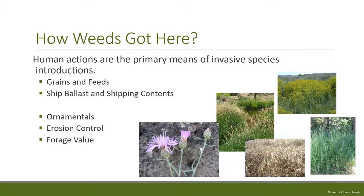Others were brought here for a perfectly good reason, like ornamentals. Yellow flag iris is a good example — a beautiful flower. Plants like leafy spurge were brought here as ornamentals. Some were brought for erosion control, like reed canary grass, which is really common in the northwest and was brought in to stabilize stream banks. Other plants were brought here because they have forage value for livestock, such as smooth brome.